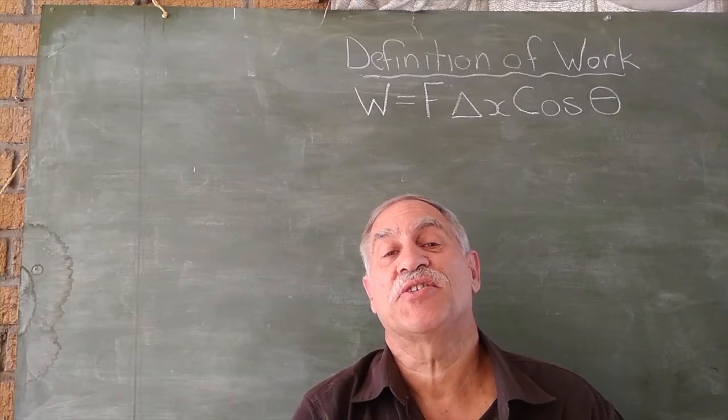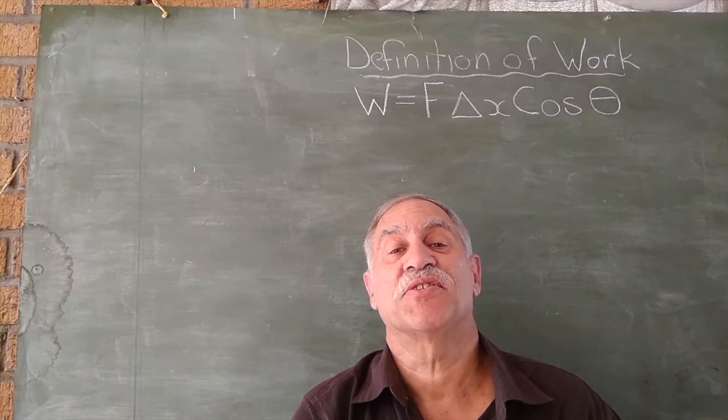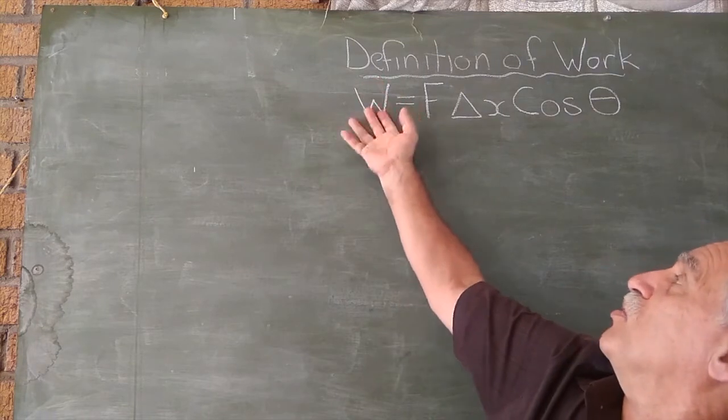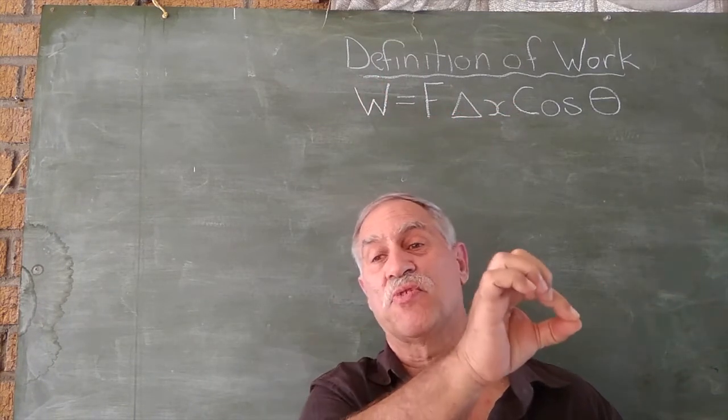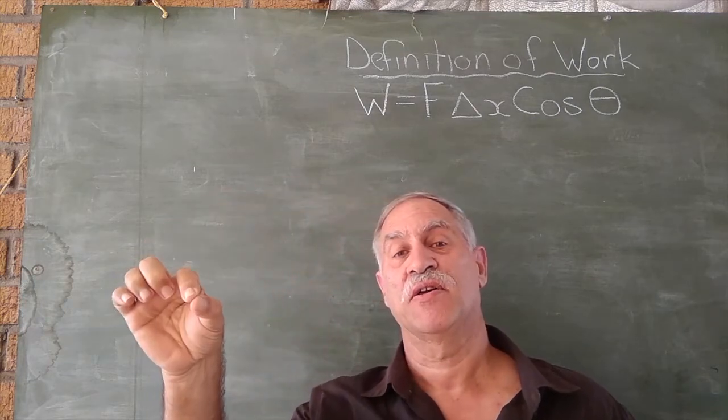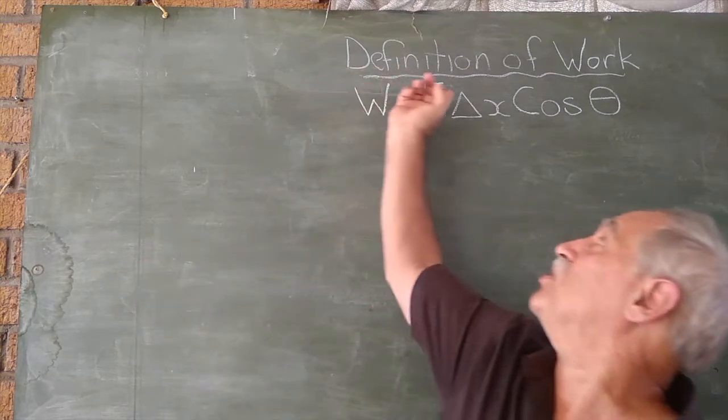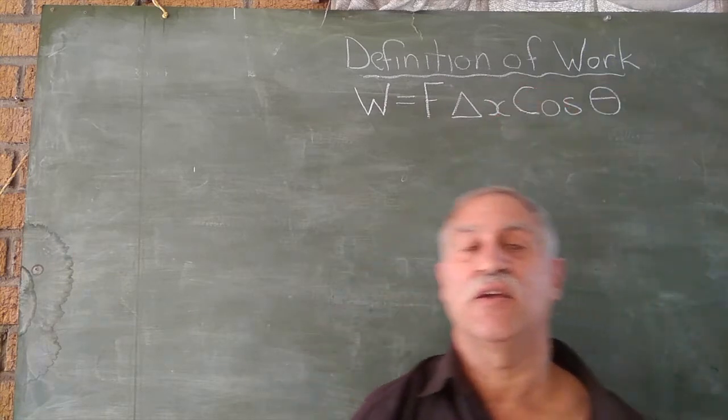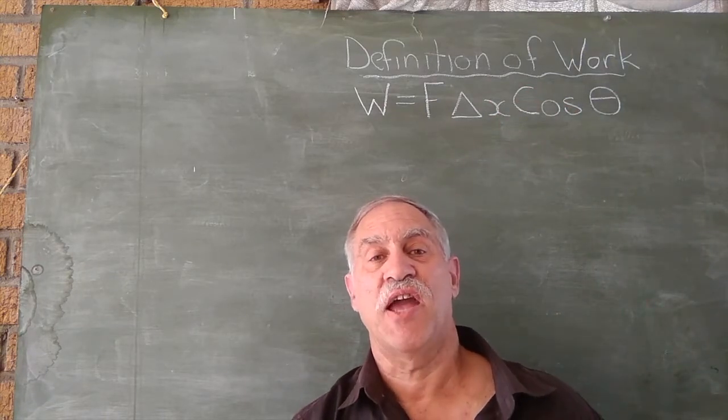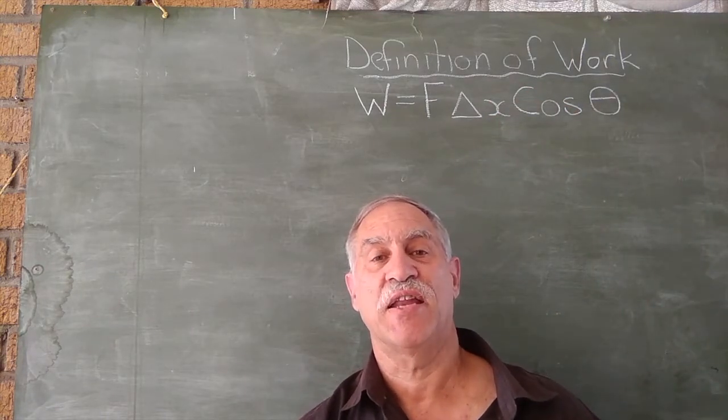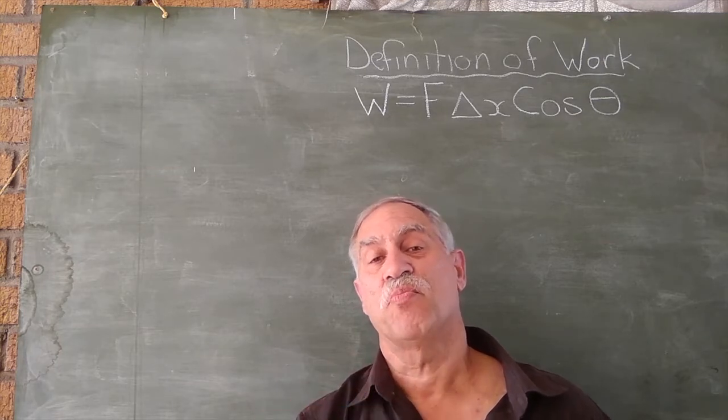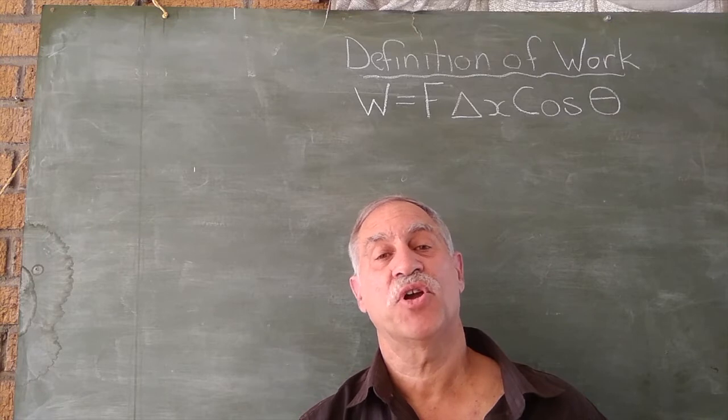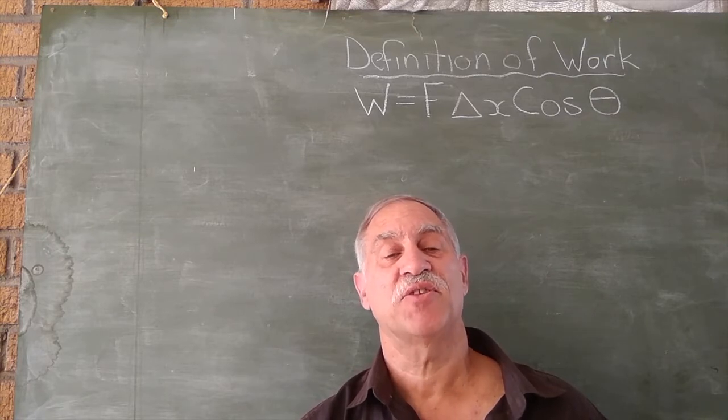In the old days, work used to be force times distance. Then work became equal to force times delta x, displacement. Delta meaning change of displacement. And then cos theta got added on, meaning we give it a negative or positive, depending on whether it's negative or positive work. But work is a scalar quantity. And we're going to be discussing all of this in this video.